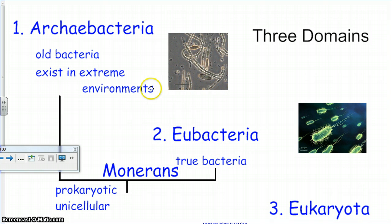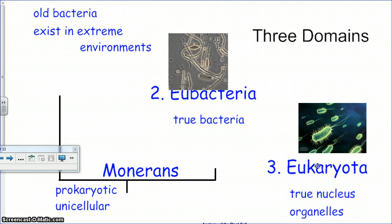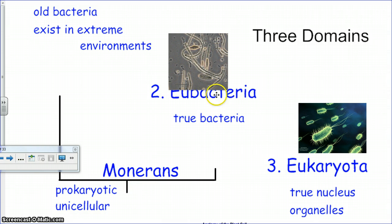The difference between archaebacteria and eubacteria is that archaebacteria tend to exist in very extreme environments, whether very hot or very cold. Eubacteria are everything else — they're considered the more modern bacteria. Now eukaryotes have a true nucleus. So monerans — these bacteria — are prokaryotic and unicellular: no nucleus, made of one cell. Eukaryotes, like us, have a nucleus with organelles inside. If a cell has many organelles or a nucleus, it's a eukaryote.